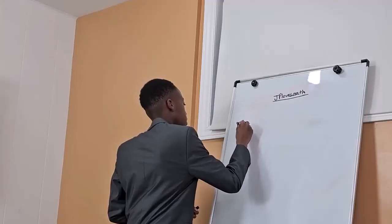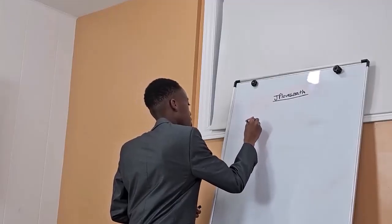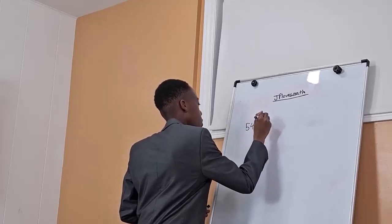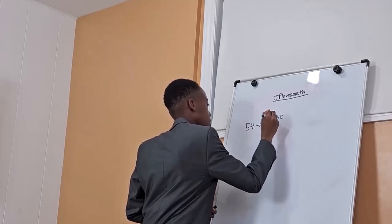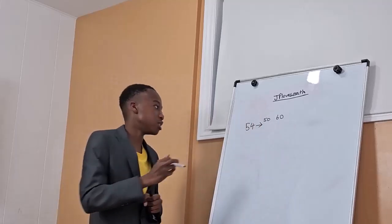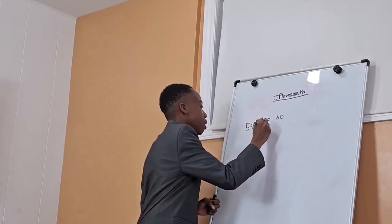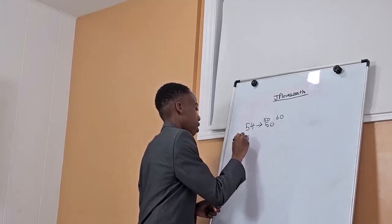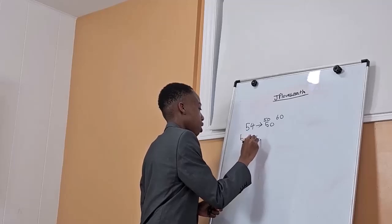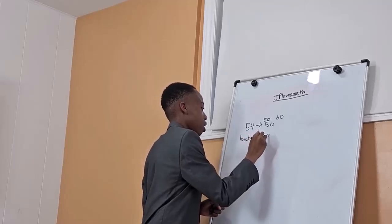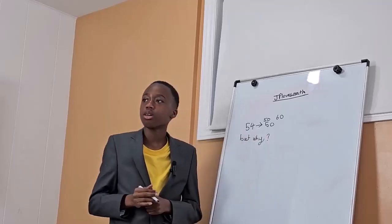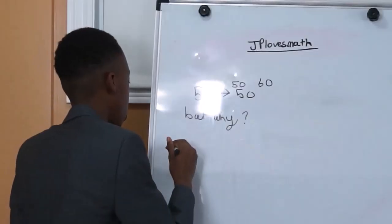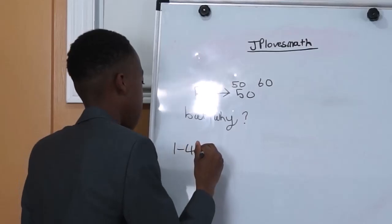How do we round 54? Do we round it to 50 or 60? Well, we round it to 50. The reason why is because from 1 to 4, we round down.